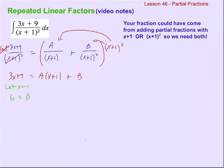To figure out A, it's a little less obvious. How do I make B disappear? There's no zero next to it. The answer is, I don't need to make B disappear — I just figured out that B equals six, so I can plug in six there. I can pick any number for x. I'll choose the easiest: zero. Our point is that 3x plus nine has to equal A times x plus one plus B no matter what x is. So three times zero plus nine equals A times one plus six, which means A equals three.